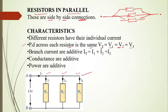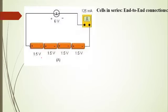Remember that in parallel circuits, the currents are additive — since they are different you take the sum of the individual currents of each resistor. Their conductance is also additive and their power is additive as well.